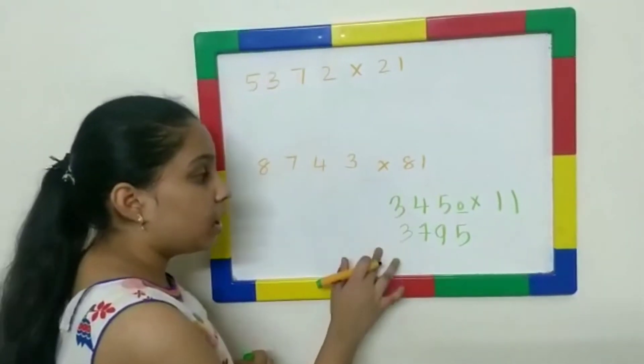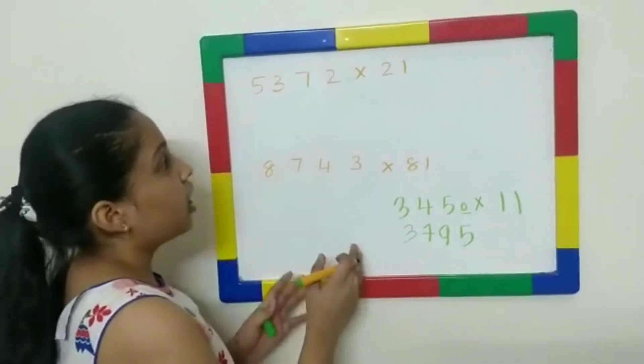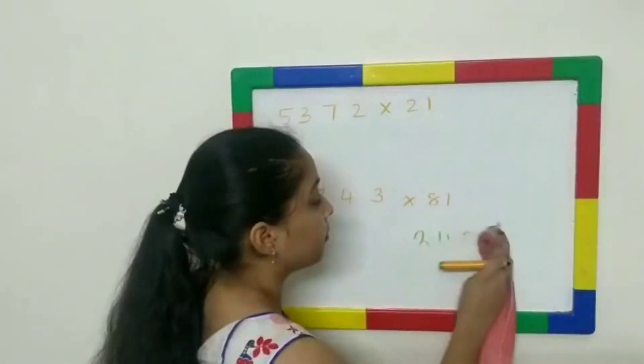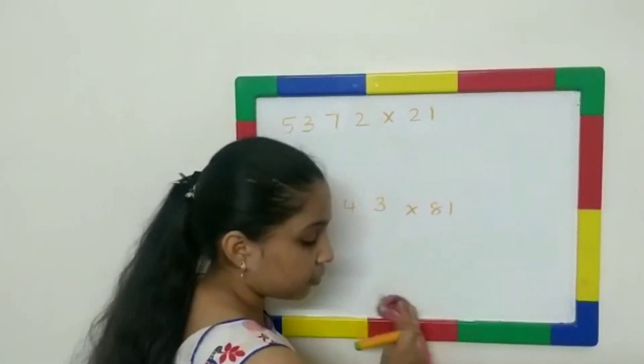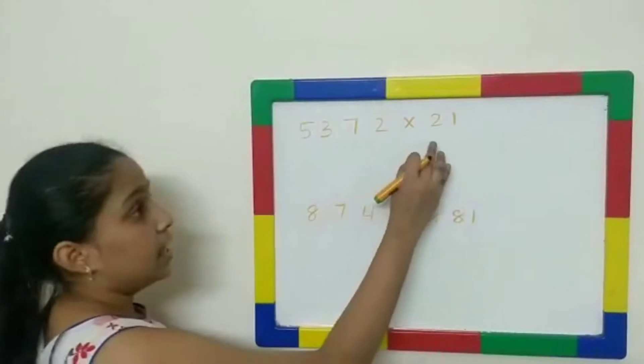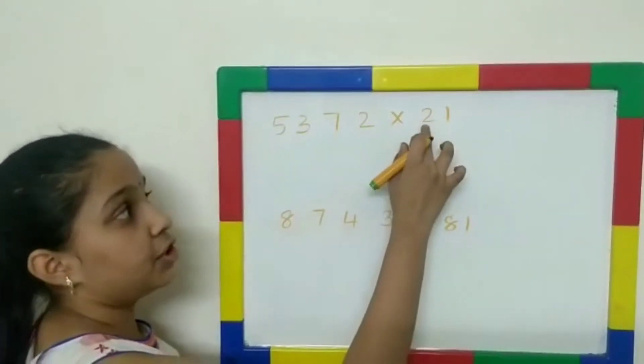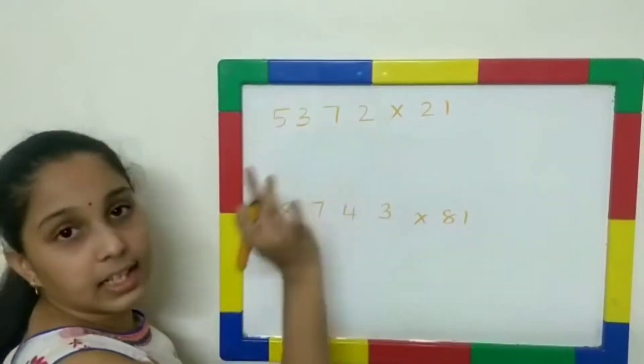Now, since we're done with the example problem, now we'll be doing the bigger problems. So, next number will be multiplied by 21. So, there's a 2 over here, 1, and then let's multiply.